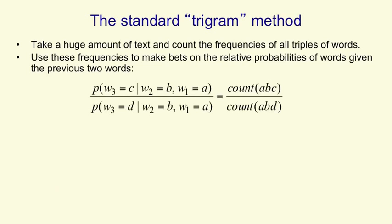So if we've heard the words a and b we can look at the counts that we have in our huge body of text for the sequence abc and the sequence abd. We can say that the relative probability that the third word will be c versus the third word will be d is given by the ratio of the two counts abc and abd. Until very recently this was the state-of-the-art method for getting the probability of the next word to help out the speech recognizer.